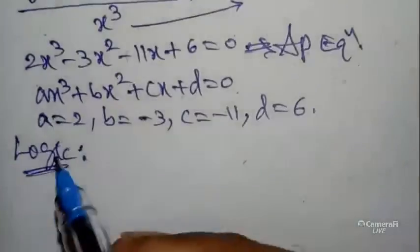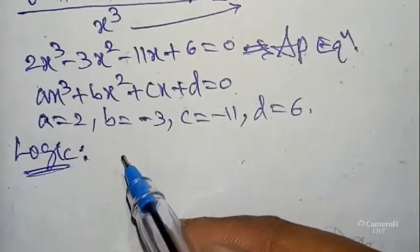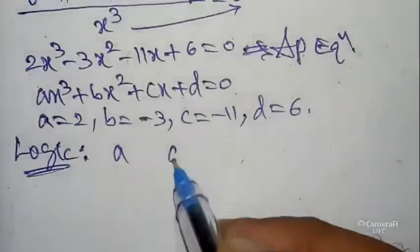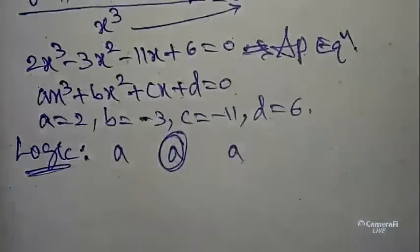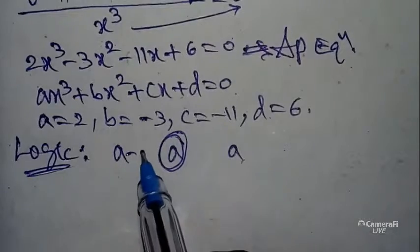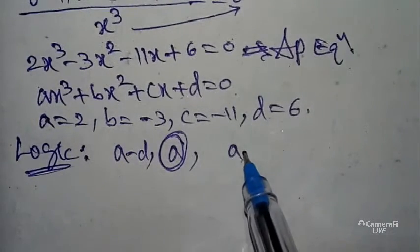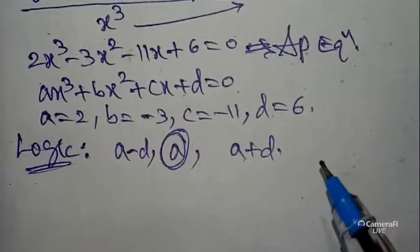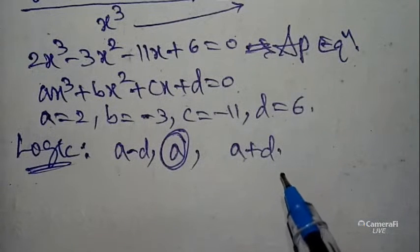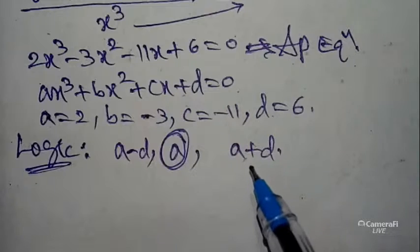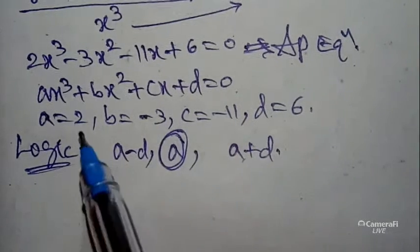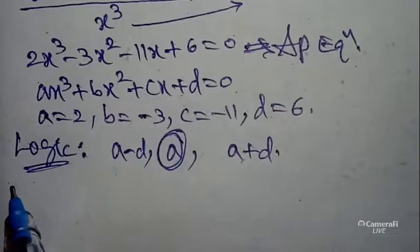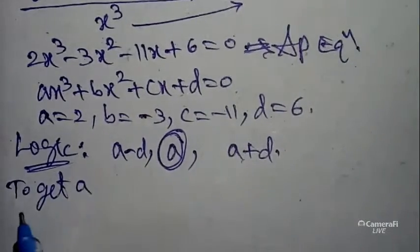For Arithmetic Progression, since the degree is 3, you can write three terms. The middle term is 'a', the left side is (a minus d), and the right side is (a plus d), where d is the common difference. So the roots are (a minus d), a, and (a plus d).